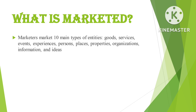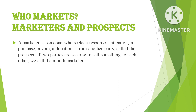Marketers market 10 main types of entities, including goods, services, events, experiences, persons, places, properties, organizations, information, and ideas. A marketer is someone who seeks a response — attention, a purchase, a vote, a donation — from another party called the prospect.